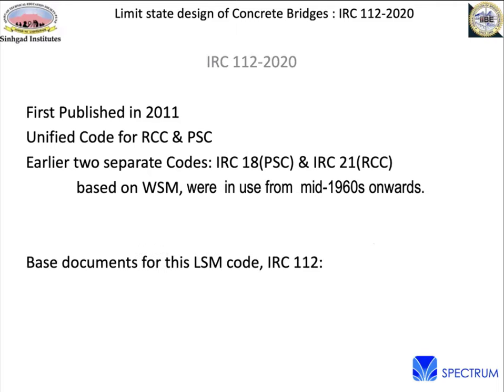This document on the design of concrete bridges with a limit state code is based on the Eurocodes — specifically EN 1992 Part 1 and Part 2. The Eurocode Part 1 is the general code for concrete structures, and Part 2 spells out modifications for bridges. This forms the background of the limit state code we are using for the design of road bridges.